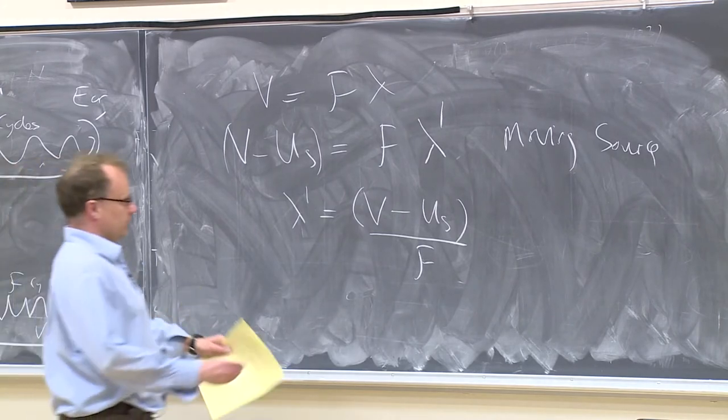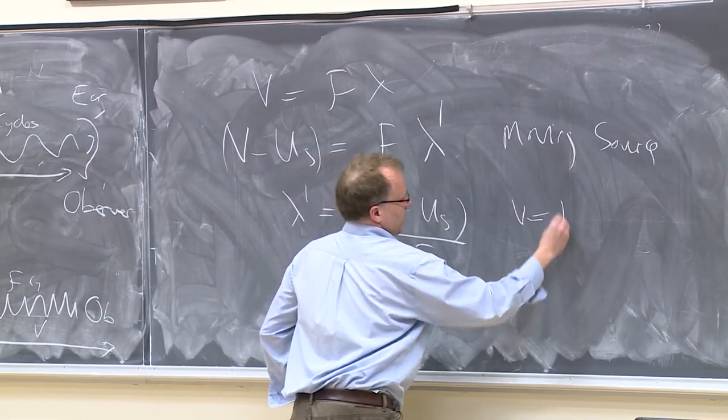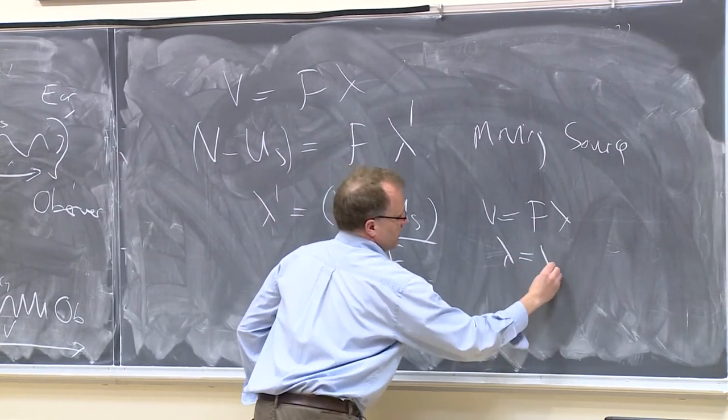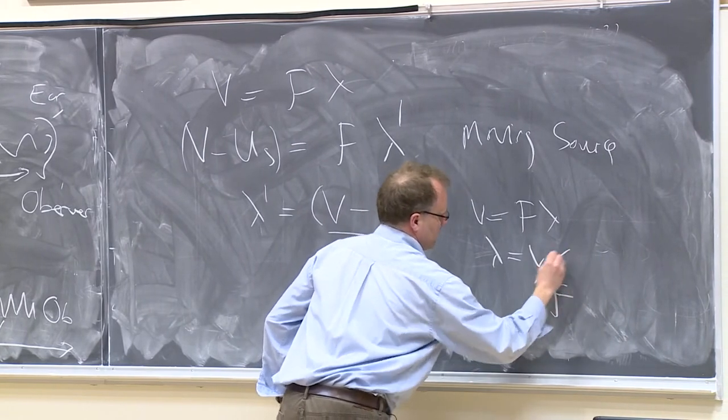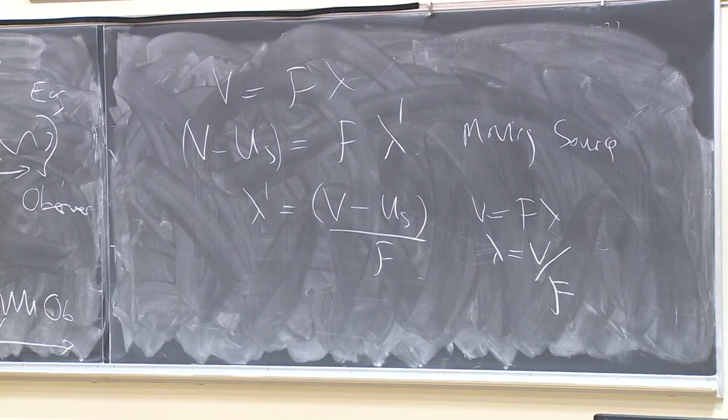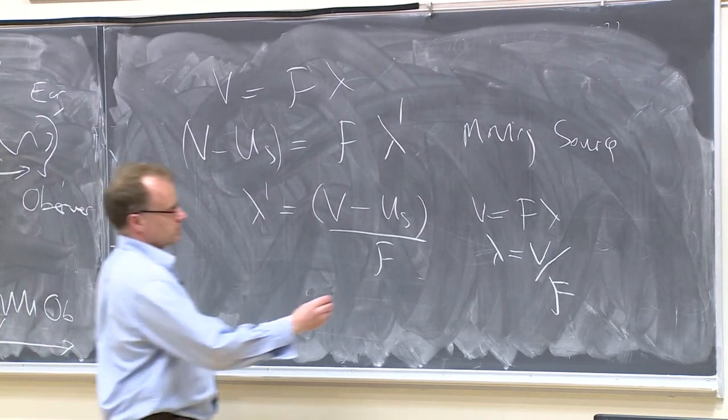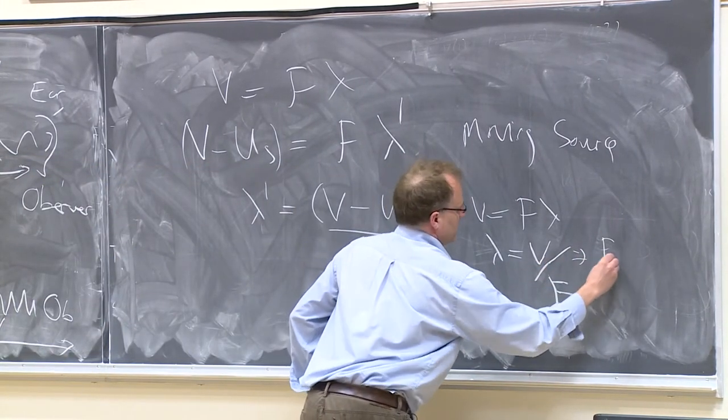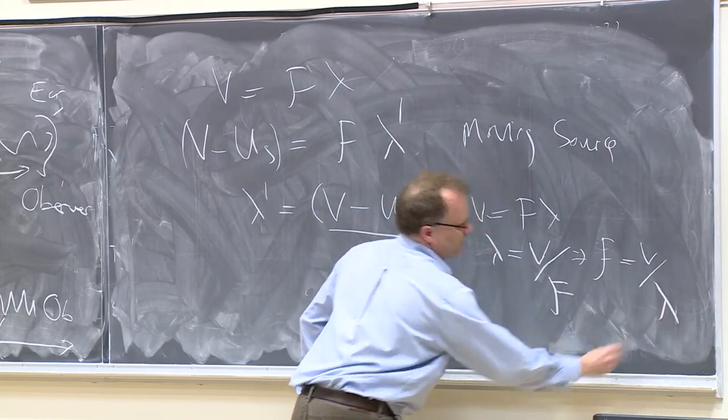We know that v equals f lambda. So lambda is v divided by f. Or, in other words, f is equal to v divided by lambda.